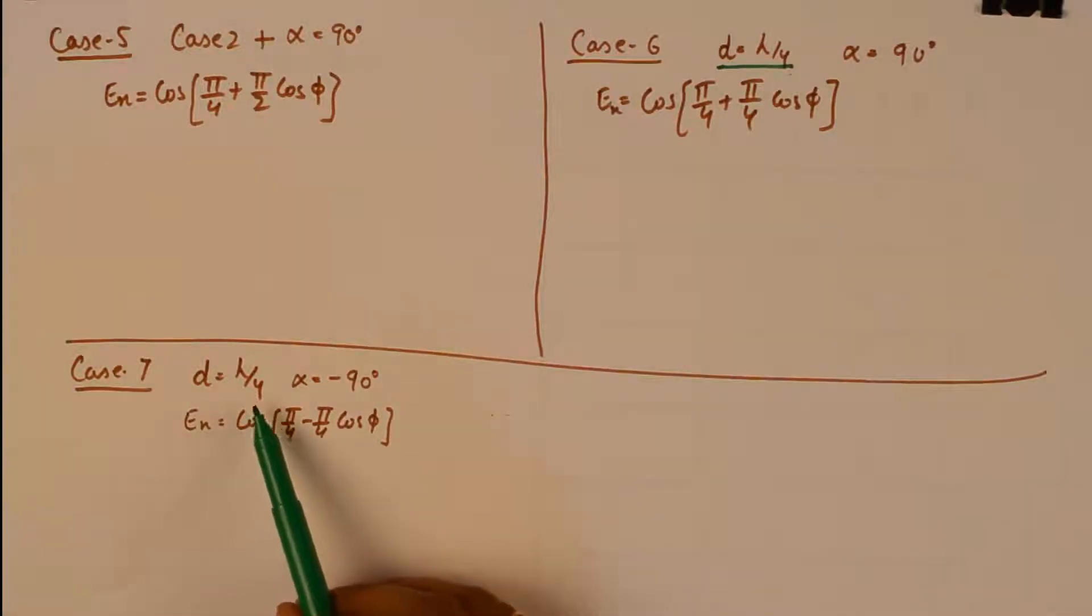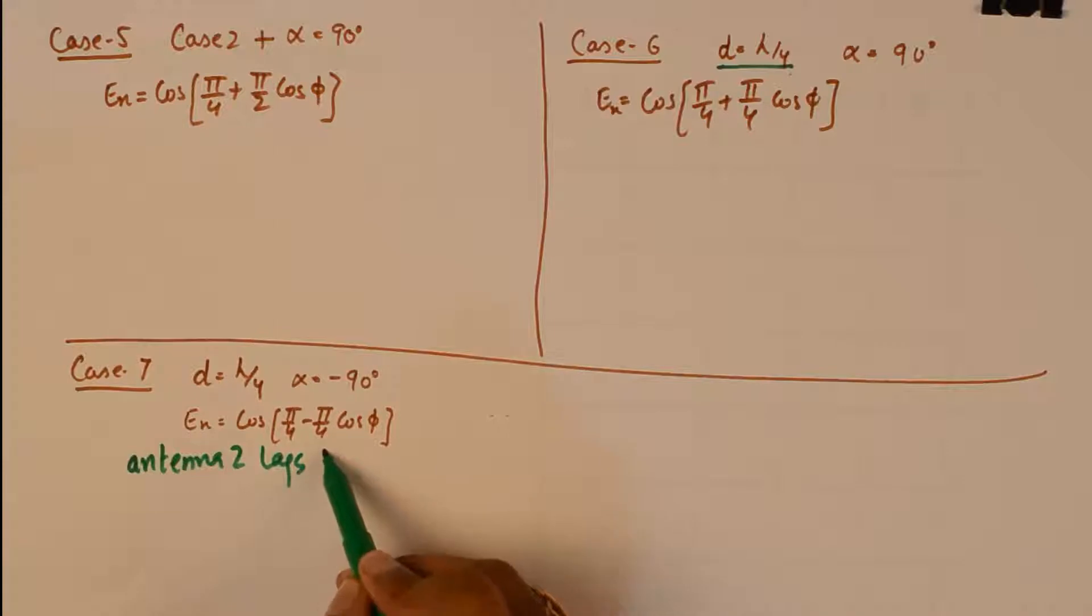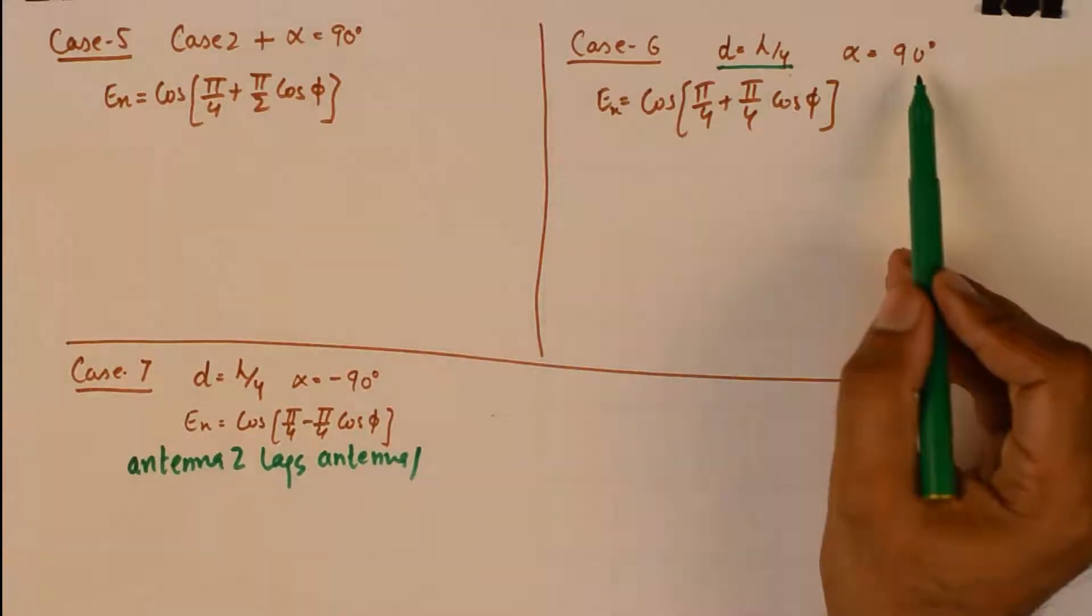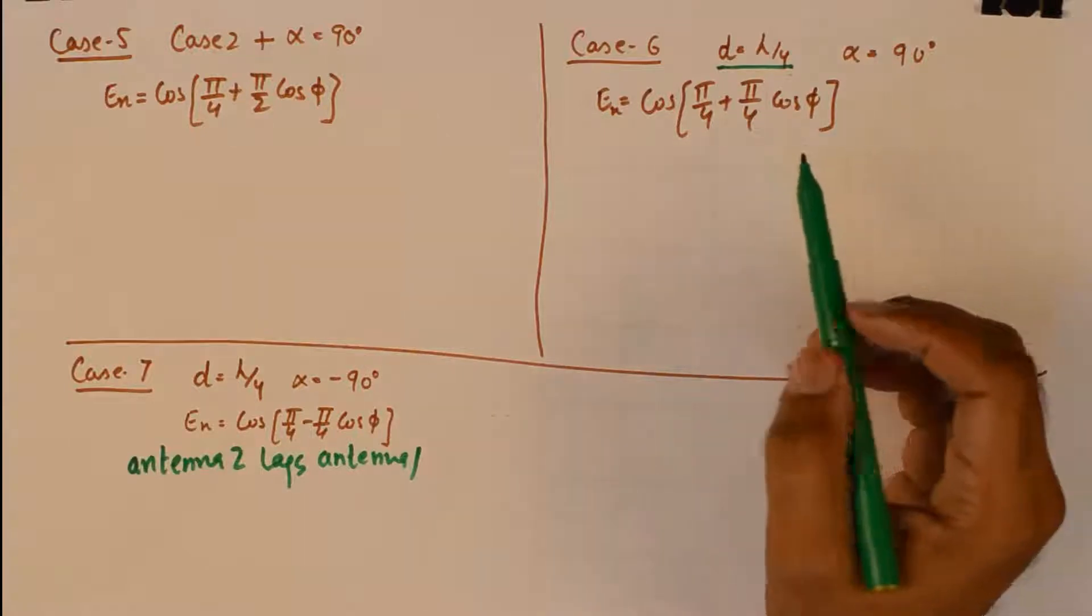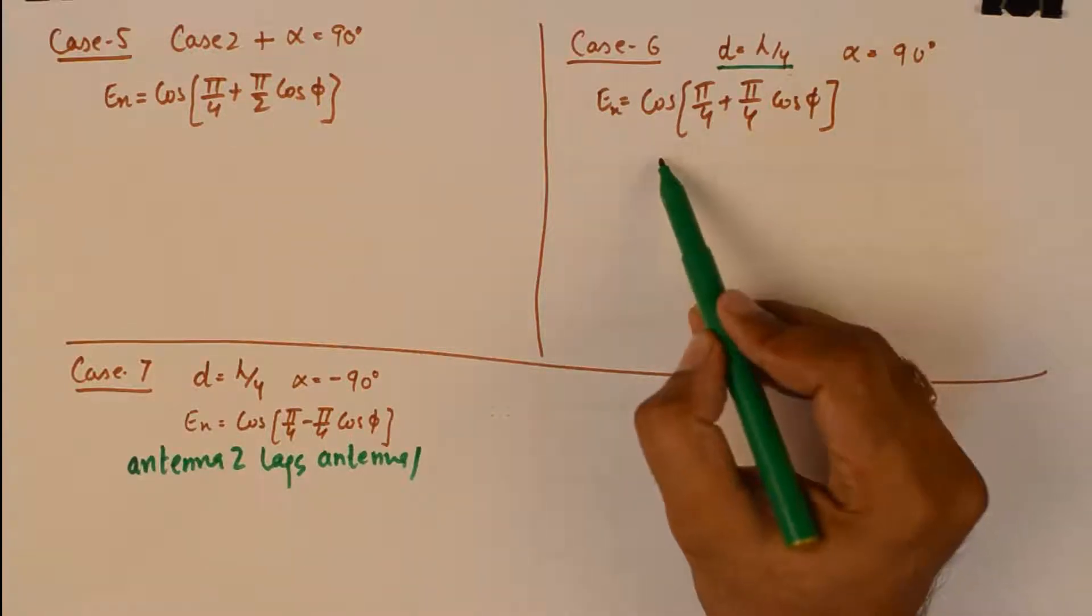And finally the seventh case is the distance is reduced from lambda by 2 to lambda by 4. Antenna 2 lags antenna 1, and plus ninety degree suggests that antenna 2 leads antenna 1.